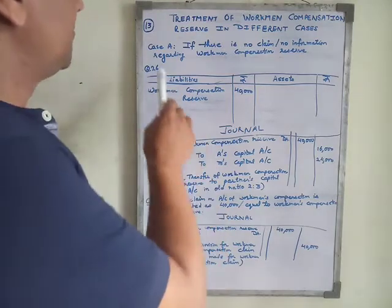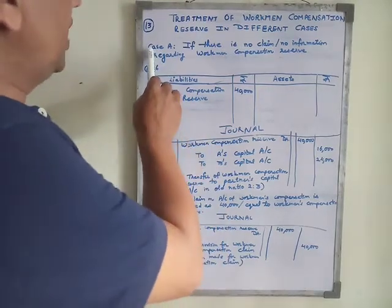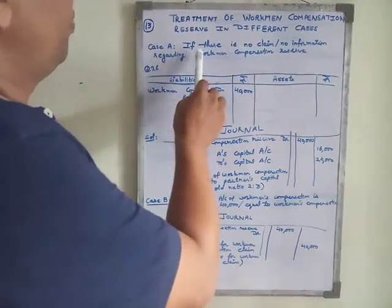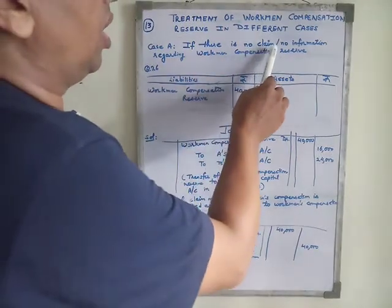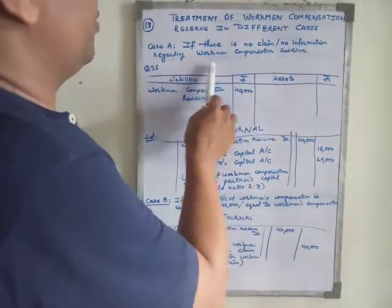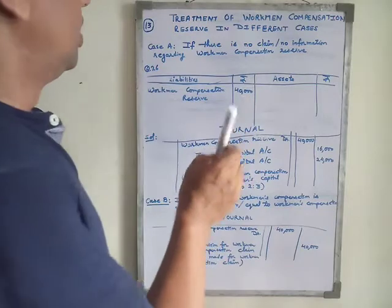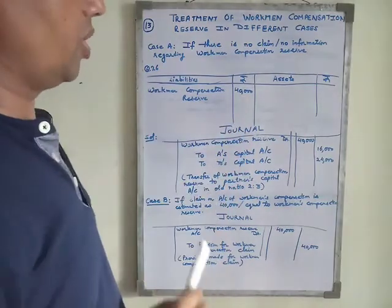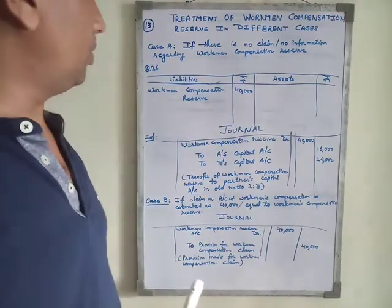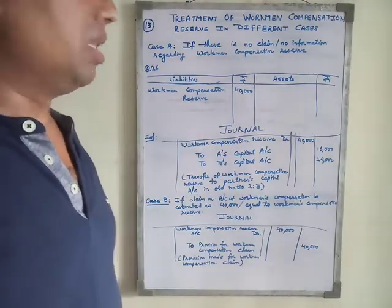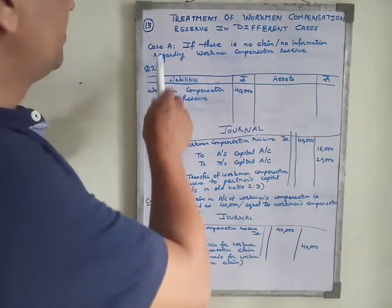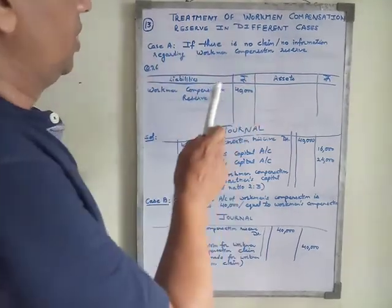The first case is Case 1: if there is no claim, or no information regarding workman compensation reserve. For this problem we take Question 26 from D.K. Goyal.